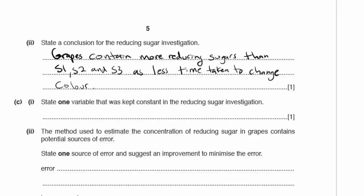State one variable kept constant in the reducing sugar investigation. There are many options: the volume of the solutions (5 cm³ per solution), the volume or concentration of Benedict's solution, the type of grape, or the temperature of the water bath. Any of those is fine. Only put down one, as one mark is awarded — do exactly what they ask for.